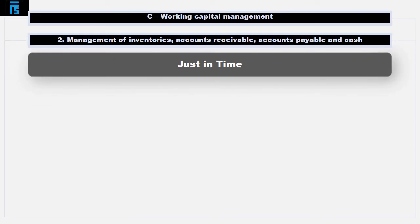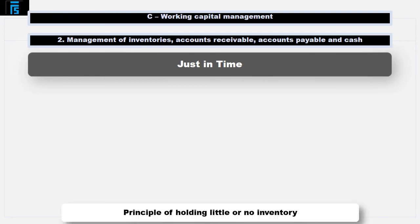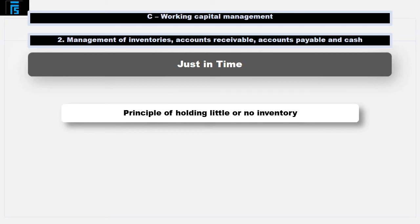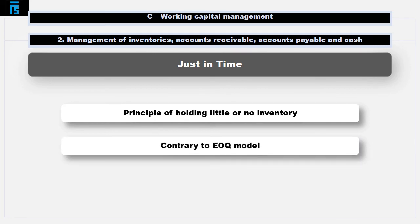Just-in-time, or JIT, is a business philosophy built around excellent quality to provide the customer with what they want when they want it. Central to a JIT approach is the principle of holding little or no inventory. This appears to be contrary to the EOQ model, as whilst holding costs will be very low, the company will need to place lots of orders for small quantities and will, as a consequence, incur high ordering costs.